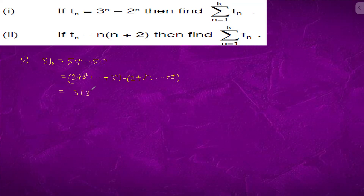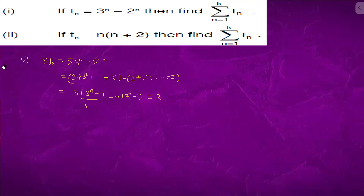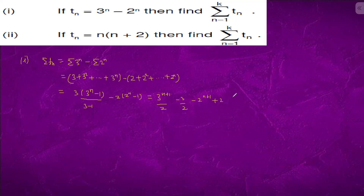This is 3 to the power n minus 1, minus 2 to the power n minus 1, upon 3 minus 1. It is simply 3 to the power n plus 1 upon 2, minus 3 by 2, minus 2 to the power n plus 1 plus 2, which is 3 to the power n plus 1 by 2, minus 2 to the power n plus 1, plus 1 by 2.